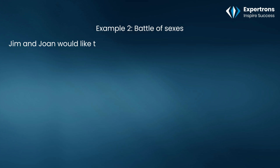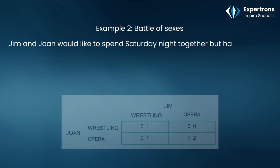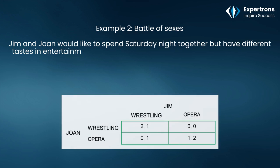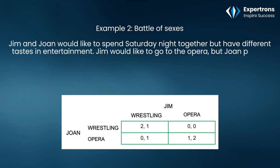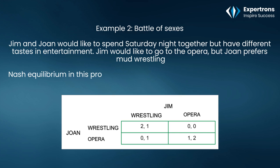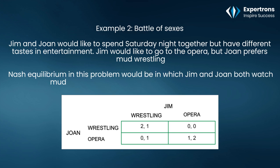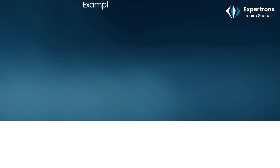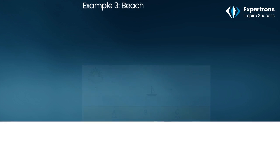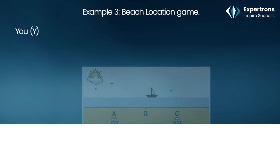Example two: the battle of the sexes. Jim and Joan would like to spend Saturday night together but have different tastes in entertainment. Jim would like to go to the opera, but Joan prefers mud wrestling. The Nash equilibria in this problem are: both Jim and Joan watch mud wrestling, or both go to the opera.